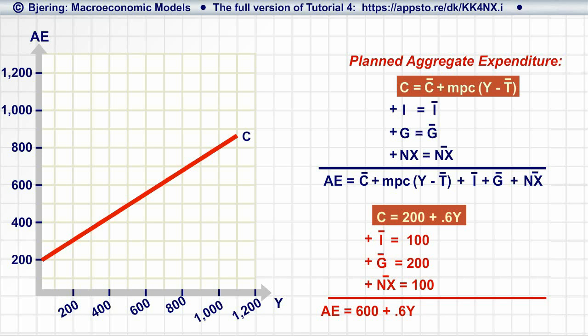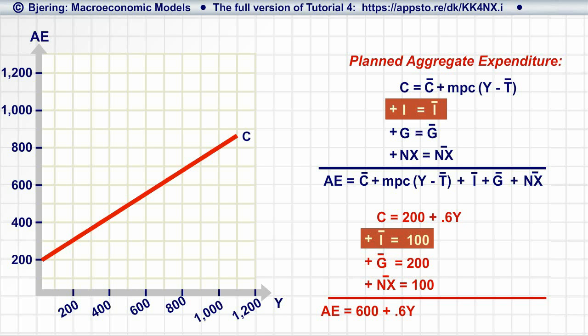Another component of planned aggregate expenditure is planned investment, I-bar. Since we assume that planned investment is independent of income, we add the investment function to the graph as a straight line parallel to and on top of the consumption function.